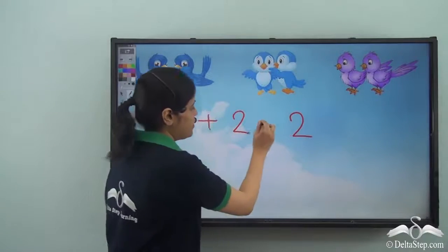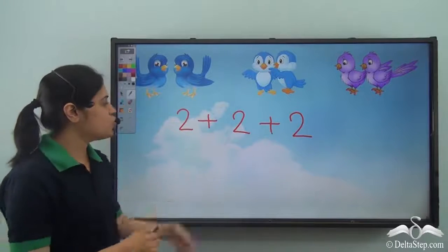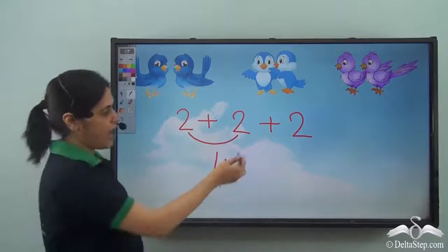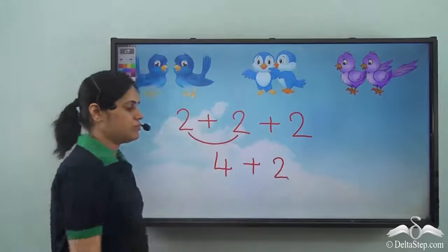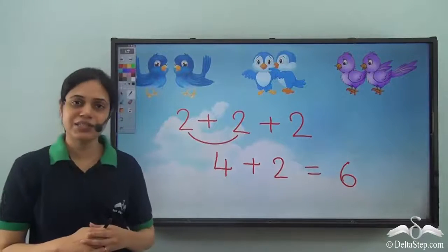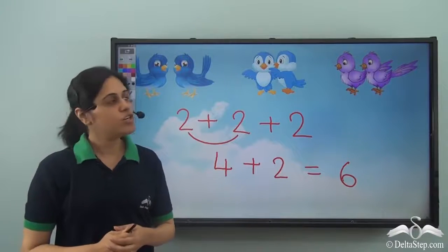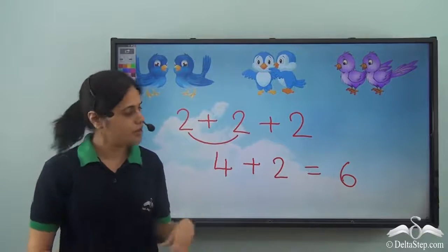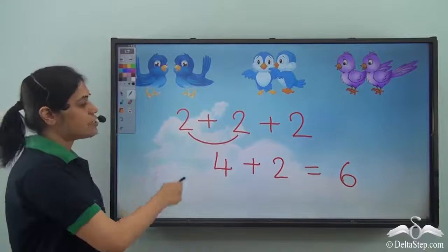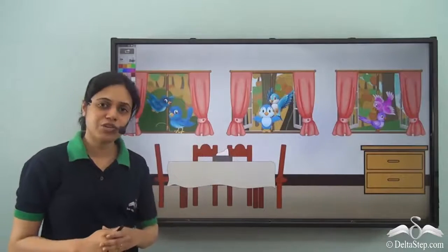Sara knows how to add, so she tries to add these. Two plus two gives four, and with another two, four plus two is six. So in total there are six birds on the windows. All three windows together have six birds, but while Sara was doing this it took a lot of time and the birds were getting very impatient because they were hungry.